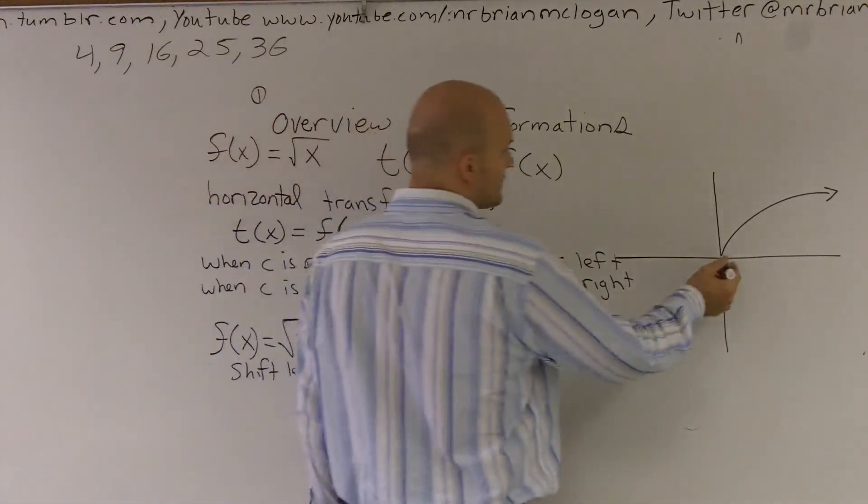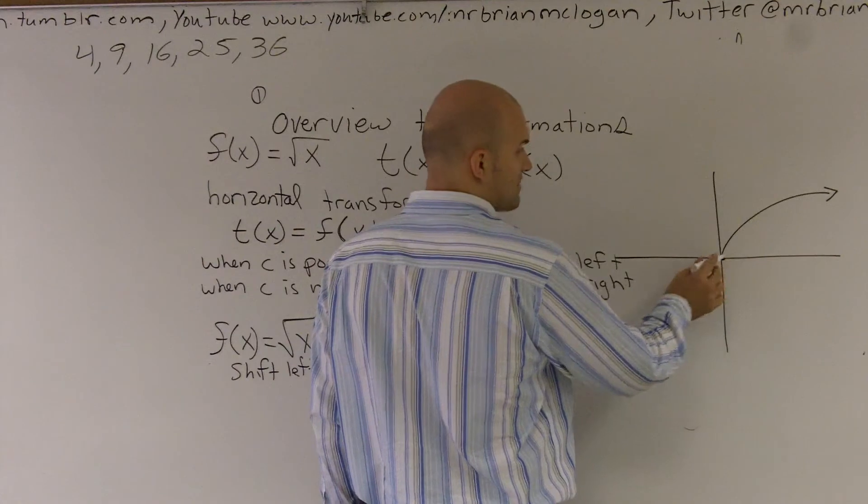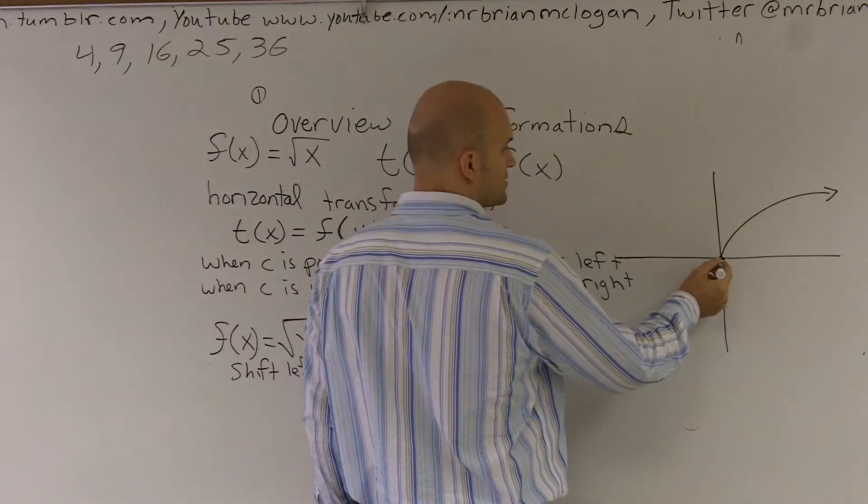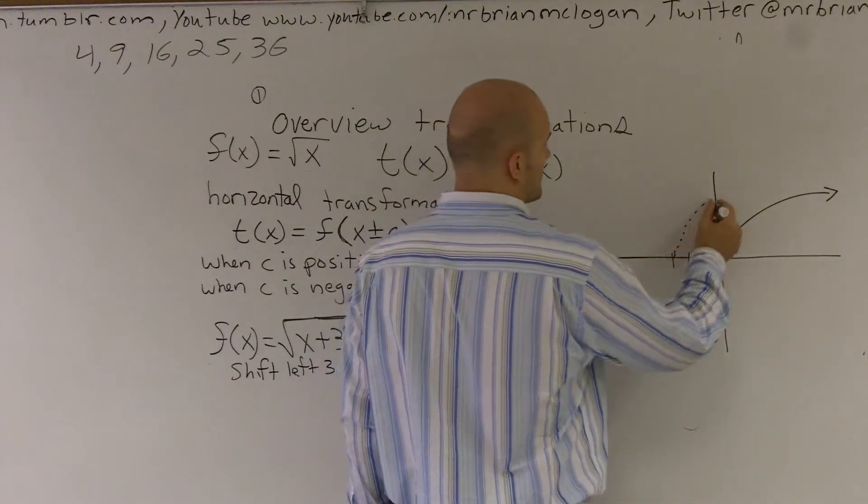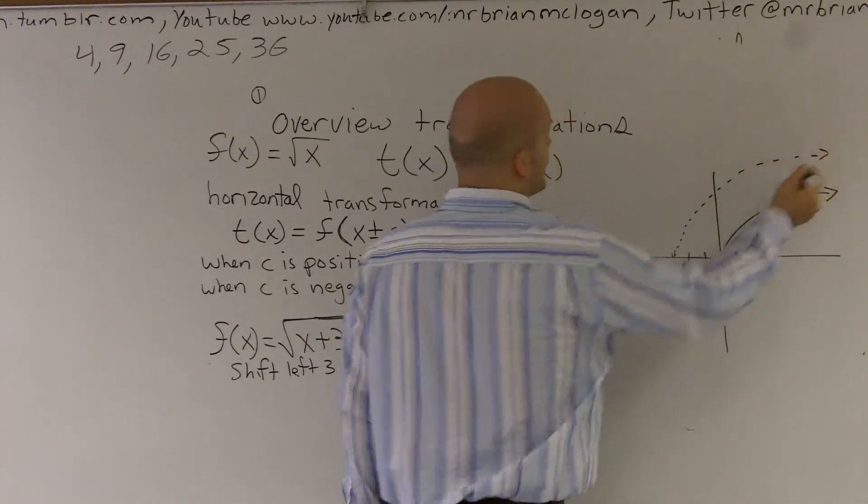Therefore, if I was going to take my graph, I would just use this point, here's my graph, I'd just shift it over 3 units: one, two, three. And I'd graph the same equation.